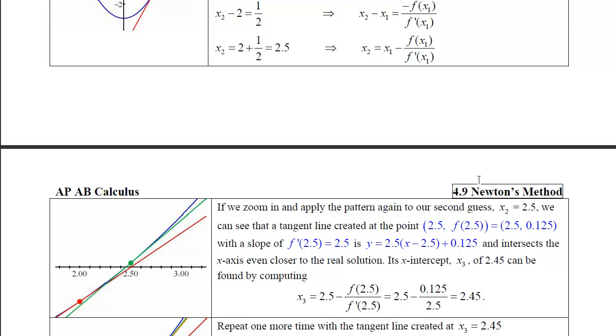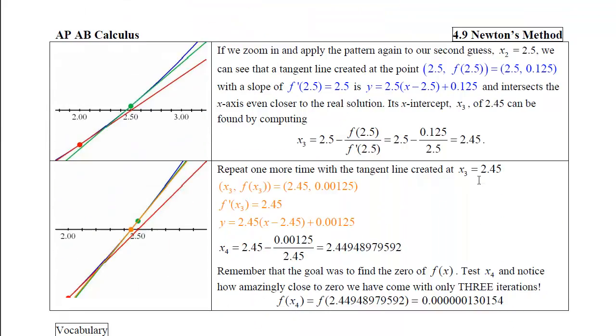Now if we zoom in and apply the pattern again to our second guess, which was 2.5, we can see that this new tangent line, the blue one, is going to intersect the x-axis even closer to the real solution. And its x-intercept, x sub 3 of 2.45, can be found by computing our old guess, which was 2.5, minus the output of the function at 2.5 divided by the slope of the function at 2.5. Plug that all in and we end up with a 2.5 using only division and subtraction.